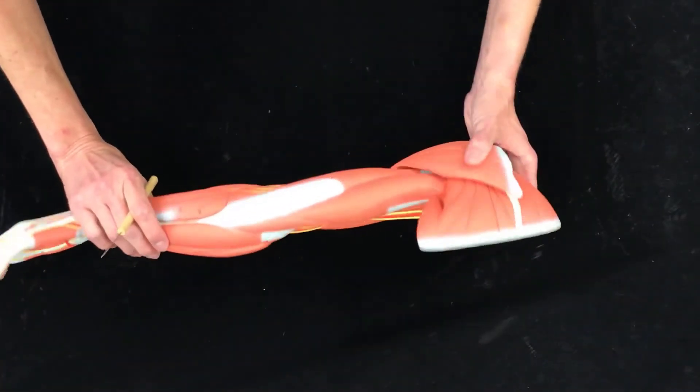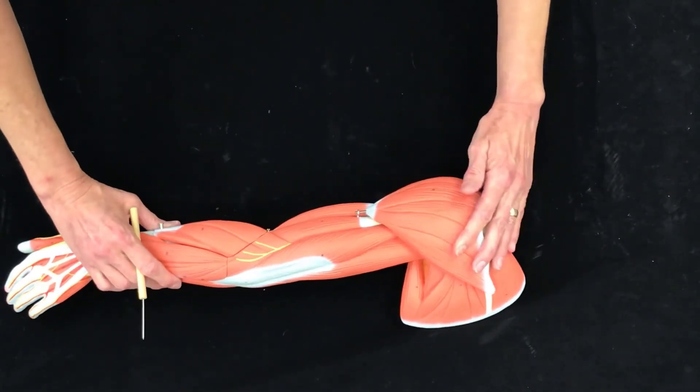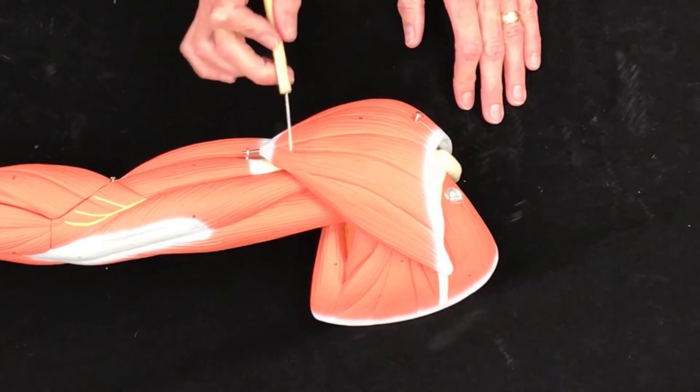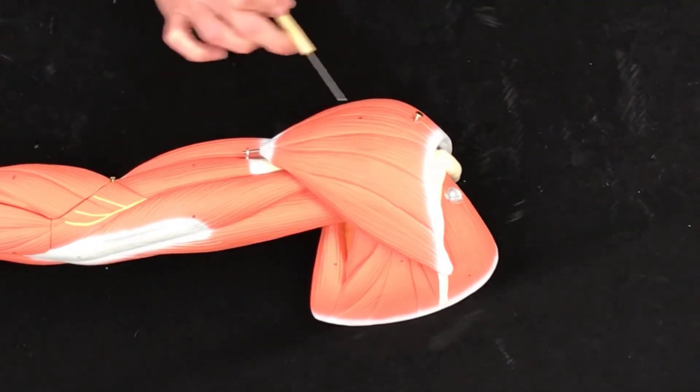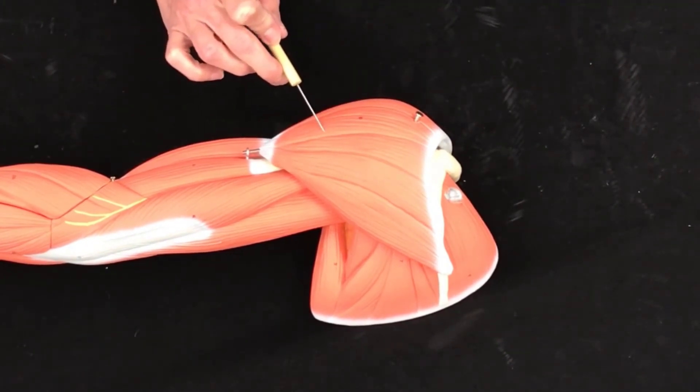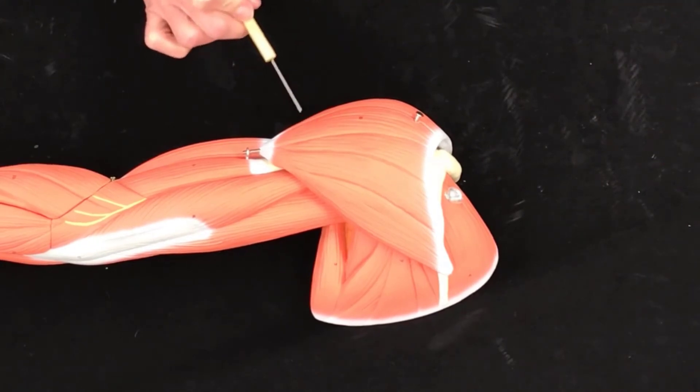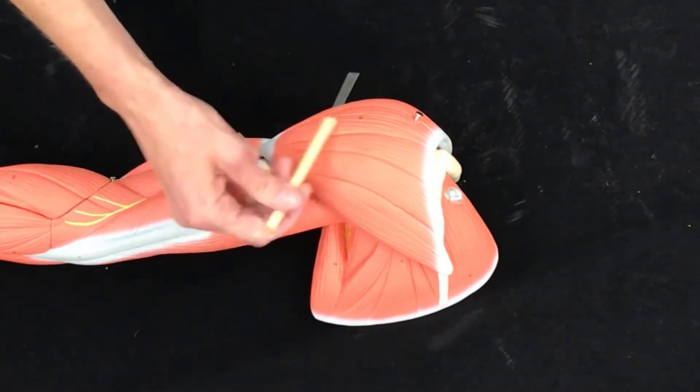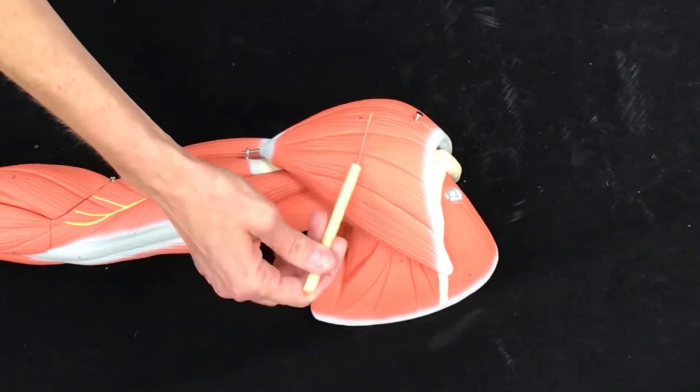Now let's flip it over. So we're now looking at the posterior surface. This would be the deltoid. The deltoid is the second IM injection site. So that's your intramuscular. Think about where you get your flu shots.